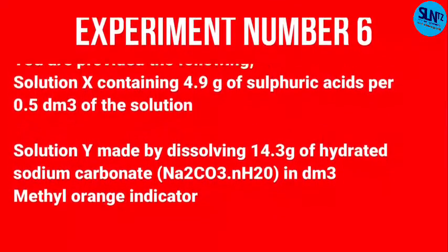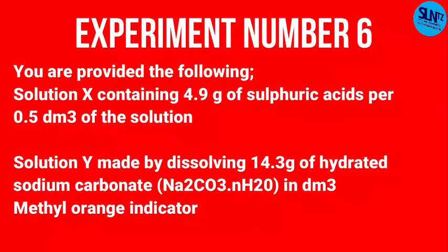You are provided with the following solutions: Solution X containing 4.9 grams of sulfuric acid per 0.5 dm³ of solution. Solution Y made by dissolving 14.3 grams of hydrated sodium carbonate in one dm³. Our indicator for titration is methyl orange. That is our data we are going to use in solving this experiment.